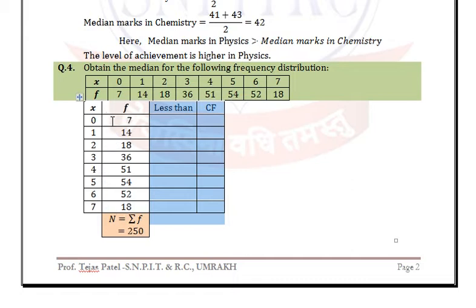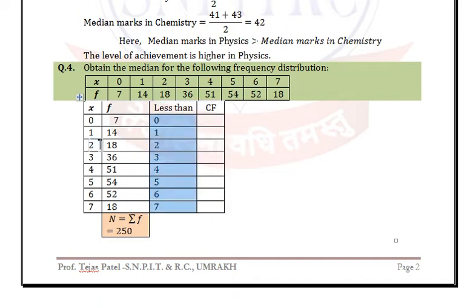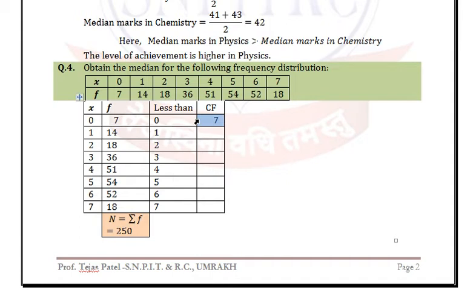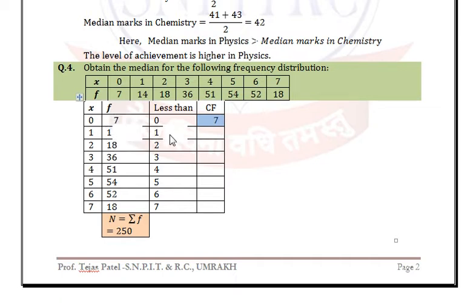Less than form means less than 0, less than 1, less than 2, less than 3, and so on. For less than 0 the frequency is 7 (default). For less than 1, add the next frequency: 7 + 14 = 21.